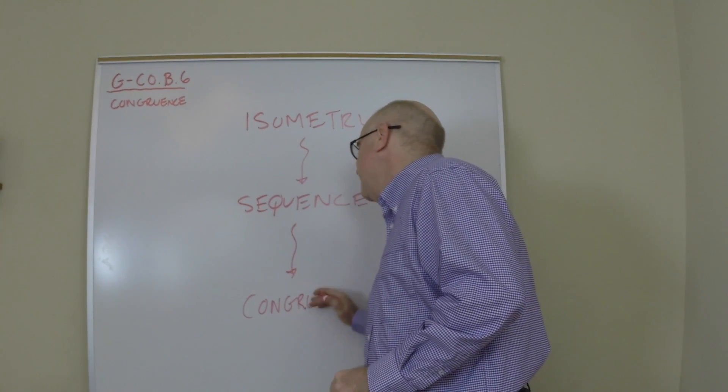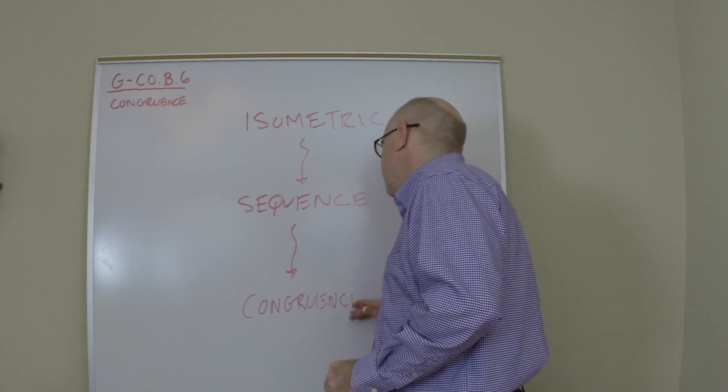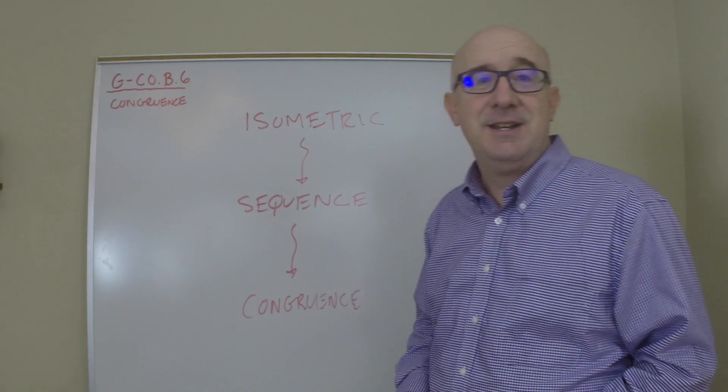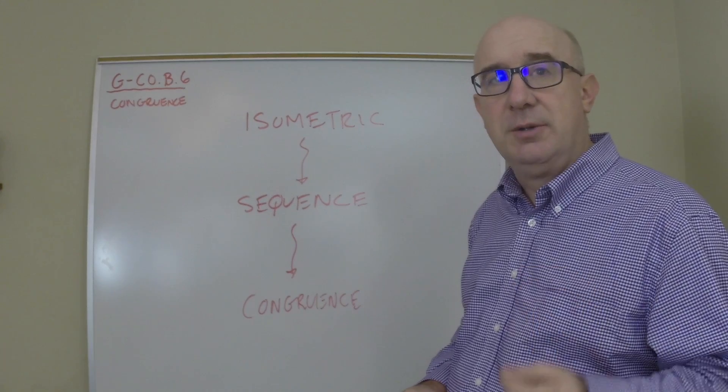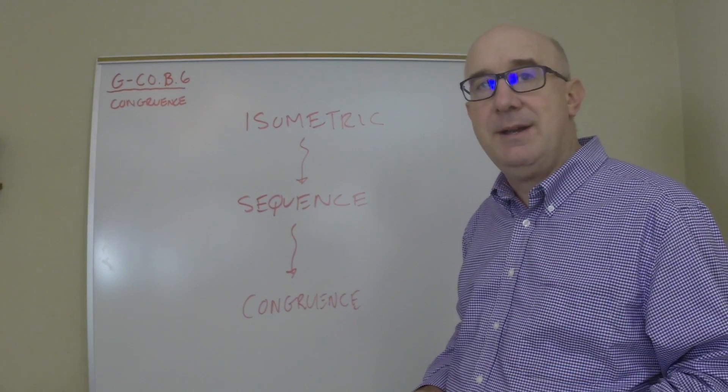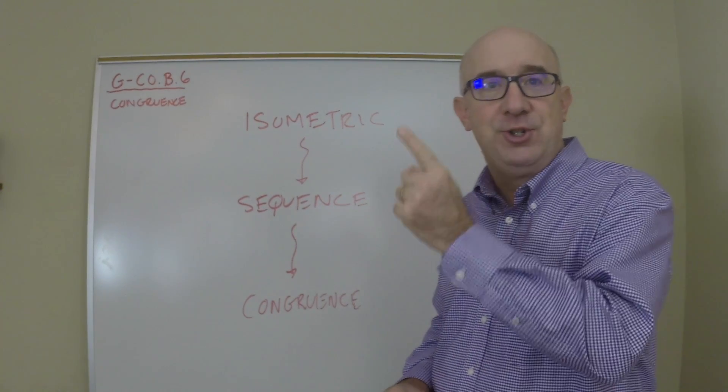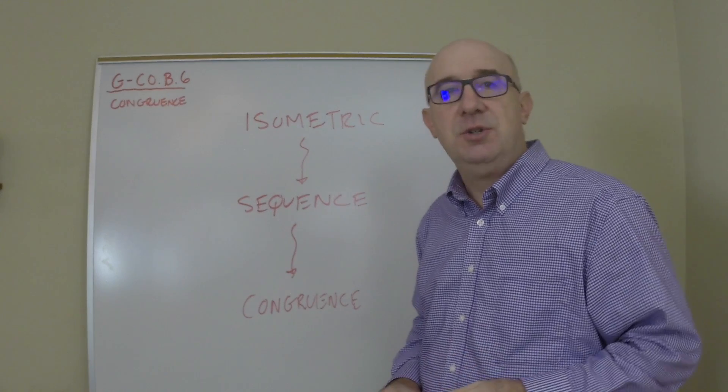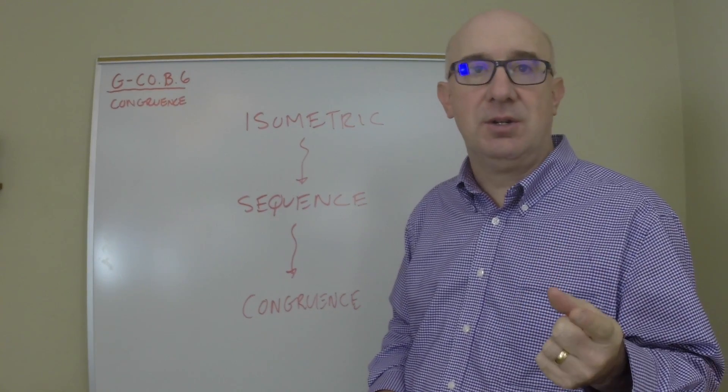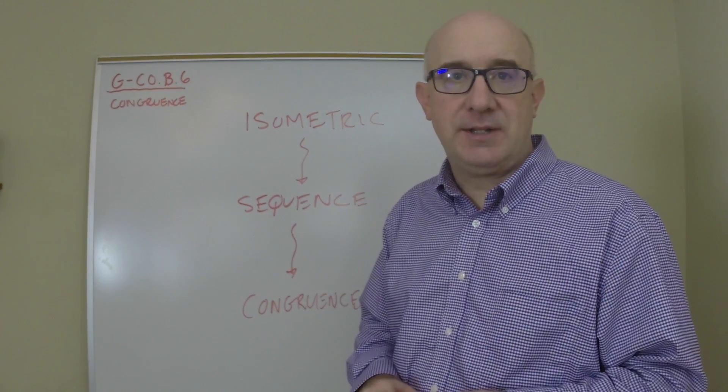The definition of congruence, the new definition of congruence is that things are congruent if I can map one onto the other using a sequence or single isometric transformation.